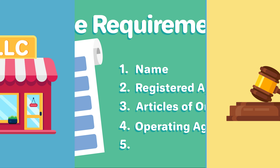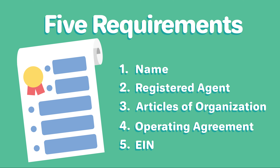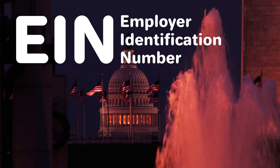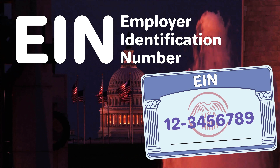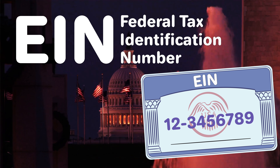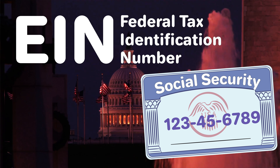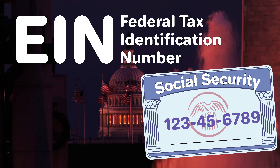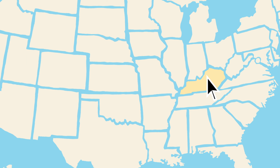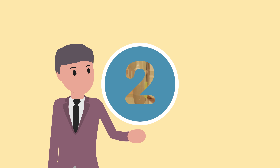Step five: obtain an EIN. Lastly, you'll need to get an employer identification number, or EIN, from the IRS, also known as a federal tax identification number. Your EIN is like a social security number for your LLC and is important for taxes and banking. EINs are free of charge and can be obtained from the IRS online or through the mail. And with that, you'll have formed a Kentucky LLC on your own.